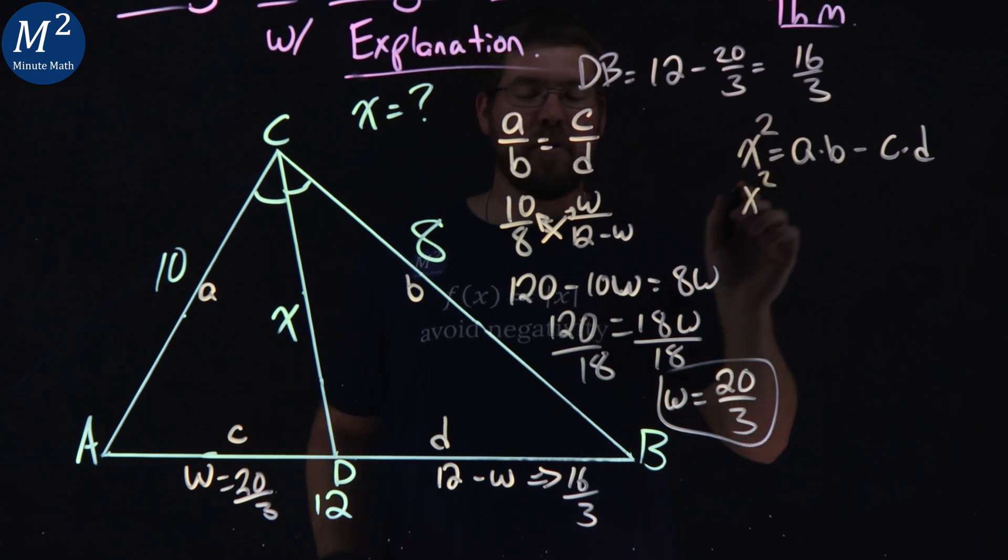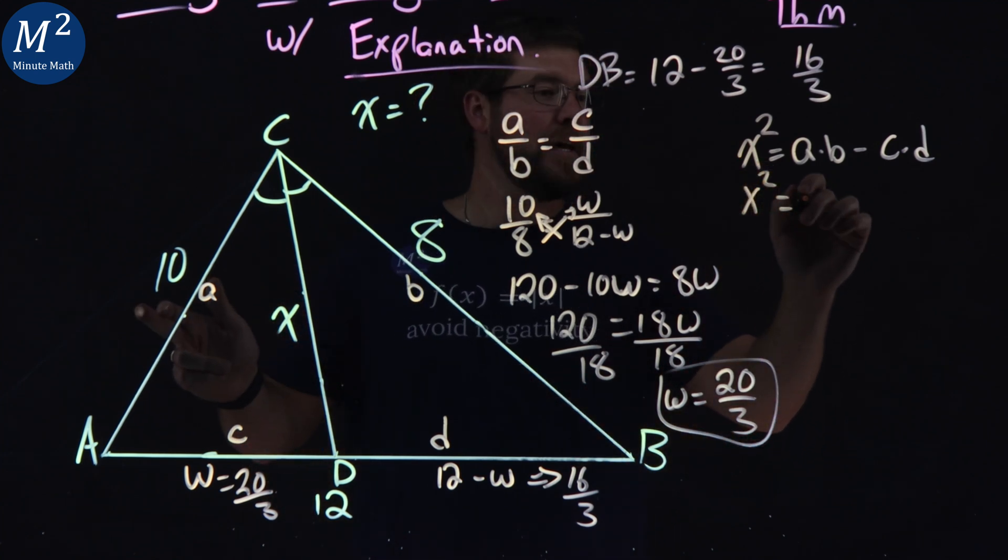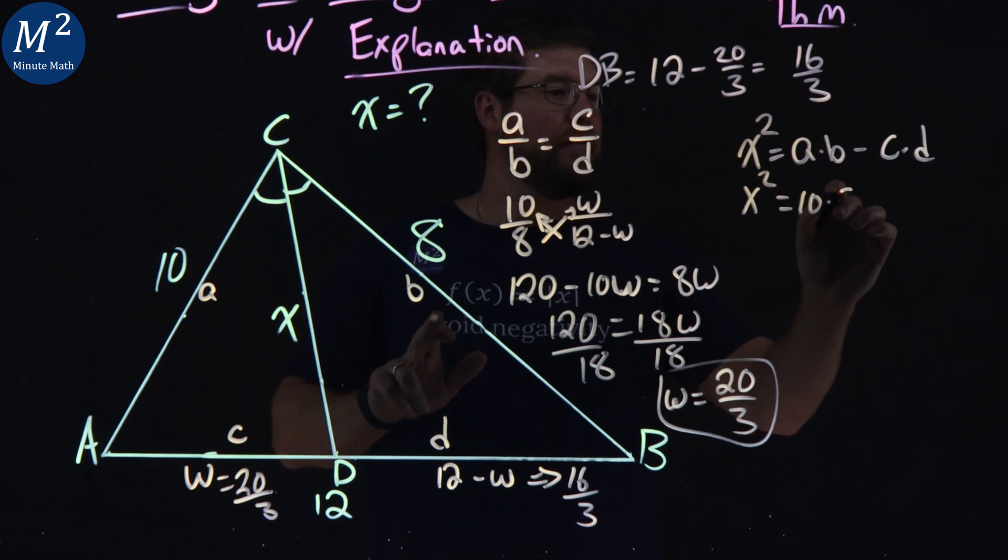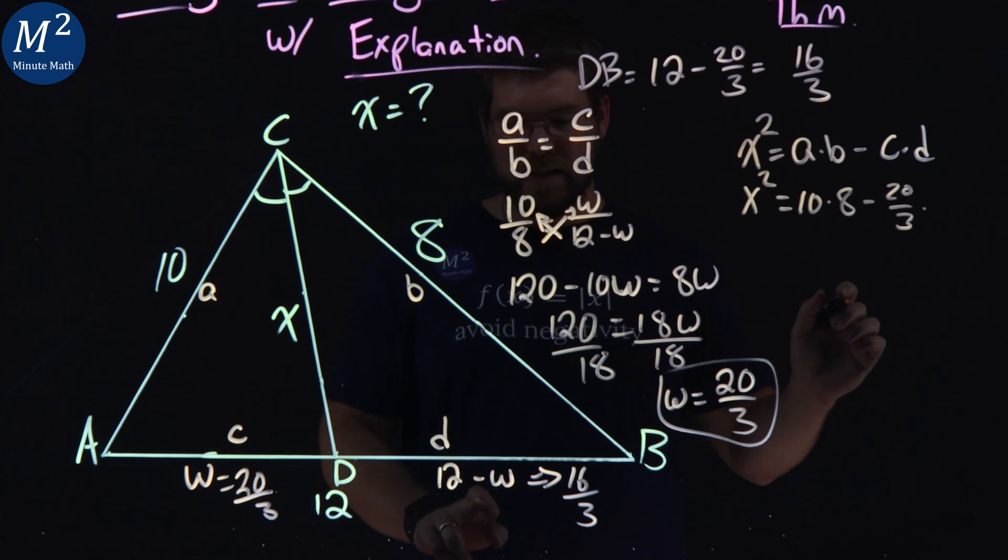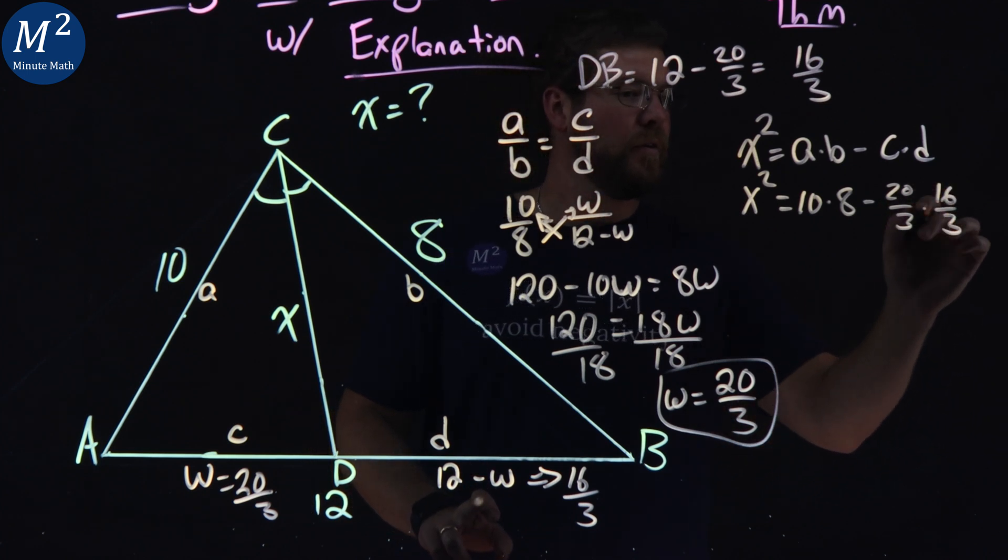So again, x squared, we don't know what x is, but we know the other values. a was 10 times b is 8 minus c, 20 over 3, times d, which is 16 over 3.